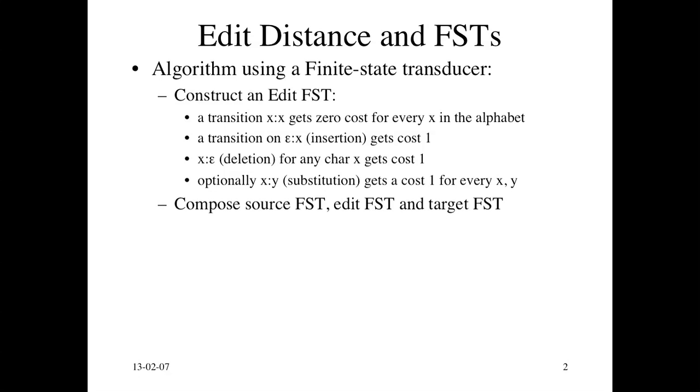Now to use this edit FST, all you have to do is compose the source string. The source string is just converted into an FST so that we can do composition, and that's really easy. You just take a source string, represent it as a finite state machine that just generates that string. Then you take the identity, which means every character in the string gets mapped to itself. So that's a simple way to construct a source FST. In the same way we construct a target FST. Then we just compose the source FST, the edit FST, and the target FST.